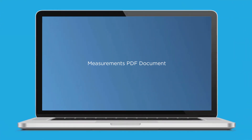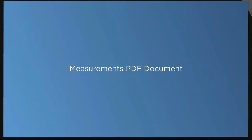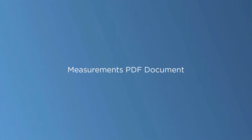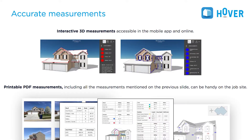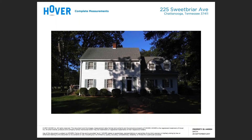Hi everyone, this is Steve with Hover. Today I'll be covering the measurement PDF document in detail. By now you know that Hover transforms mobile device photos of a structure into accurate exterior measurements. These measurements are provided to you on an interactive 3D model and in a PDF formatted document as well. You can access the PDF in-app or online, print it, or export the measurements to Excel.